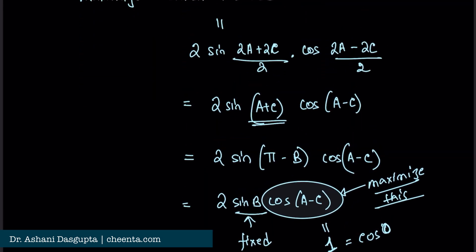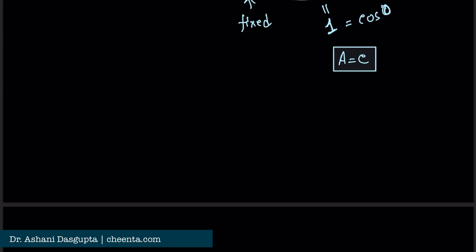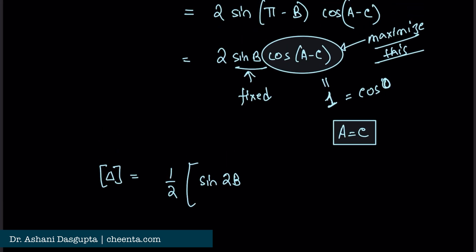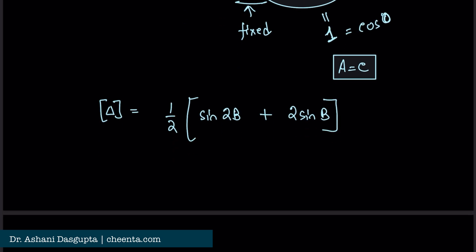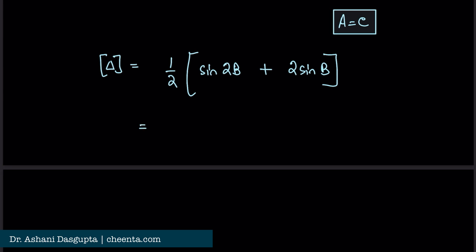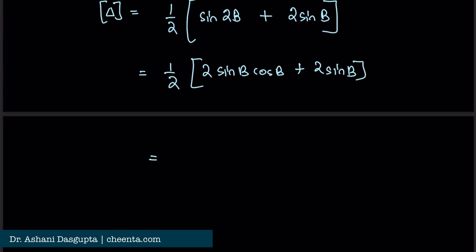When angle A equals angle C, the maximized area works out to half of (sin 2B + 2 sin B), which simplifies to sin B (cos B + sin B) — wait, more precisely: half of (sin 2B + 2 sin B) = half times (2 sin B cos B + 2 sin B) = sin B (cos B + 1). This is the maximized area as a function of B.